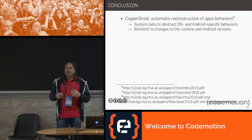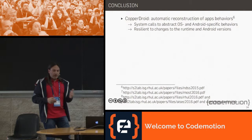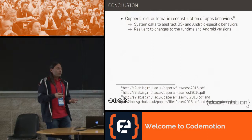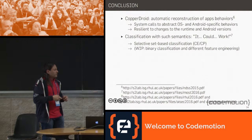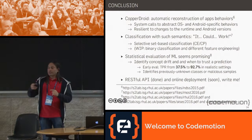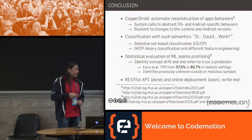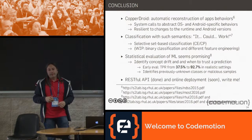To conclude: CopperDroid dynamically analyzes Android applications using only system calls to reconstruct behavior, without modifying the operating system. It reconstructs behaviors regardless of whether initiated from Java or native code, and reconstructs Binder transactions. This information is useful for multi-class classification. We're expanding to binary classification and more sophisticated models. The same approach lets you detect when a model starts decaying and it's time to retrain. We have a RESTful API done and online deployment coming soon — if you're interested, drop me a line.